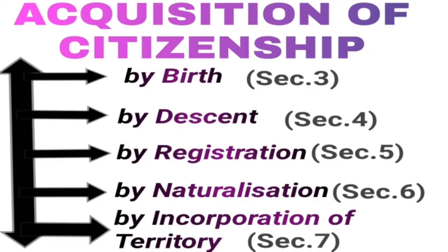Let us see the acquisition of citizenship. There are five ways: By Birth (Section 3), By Descent (Section 4), By Registration (Section 5), By Naturalization (Section 6), and By Incorporation of Territory (Section 7).